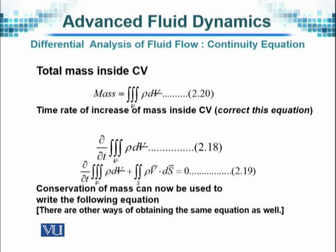The total mass will be the integral of rho times dV. Rho will take care of the mass and V of the volume. So density times total volume will give us the mass.